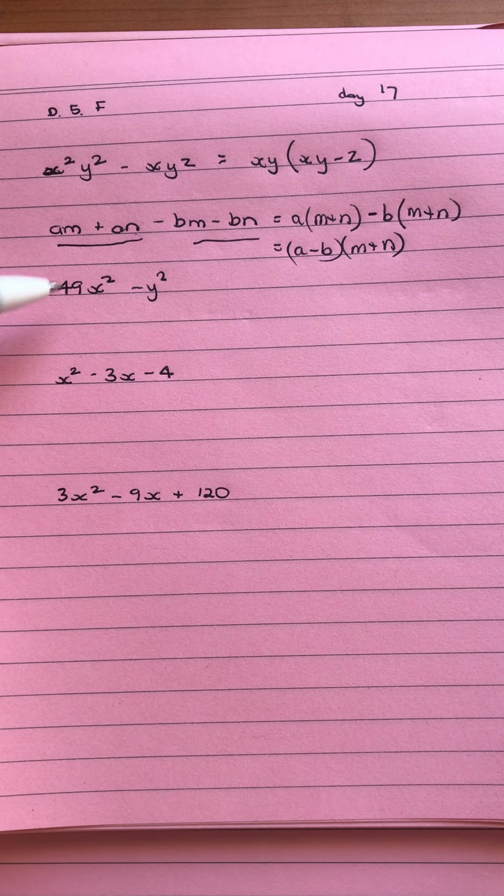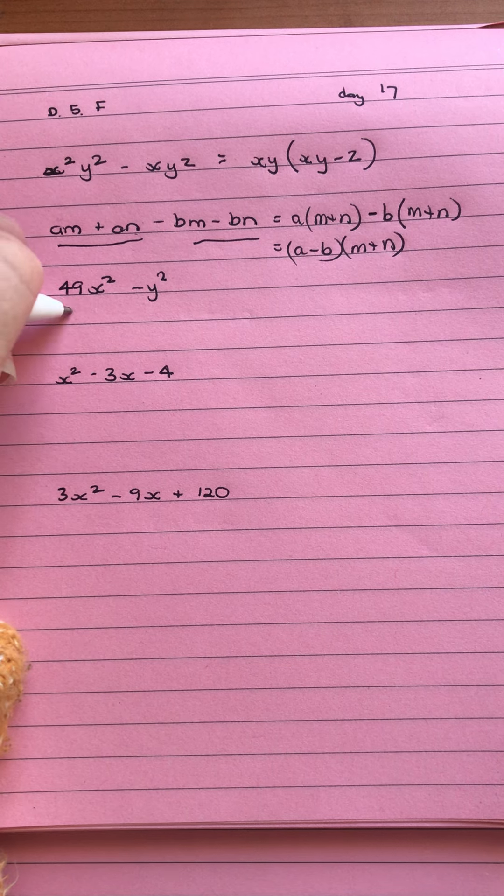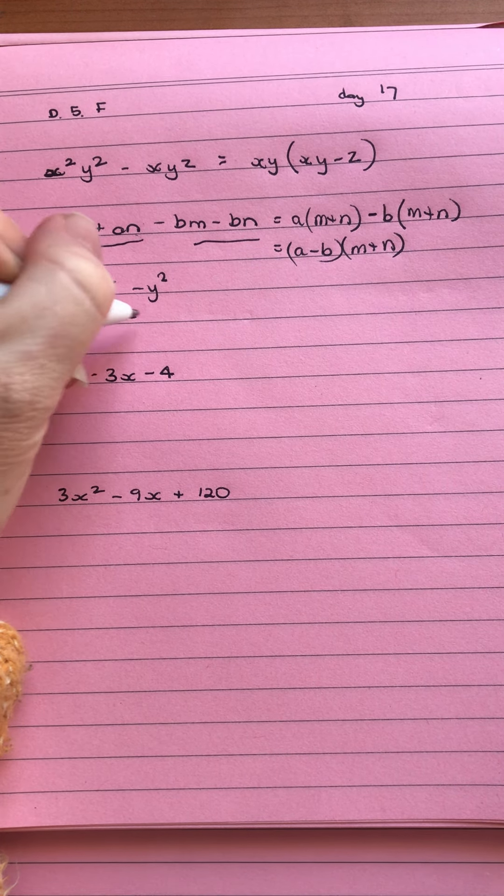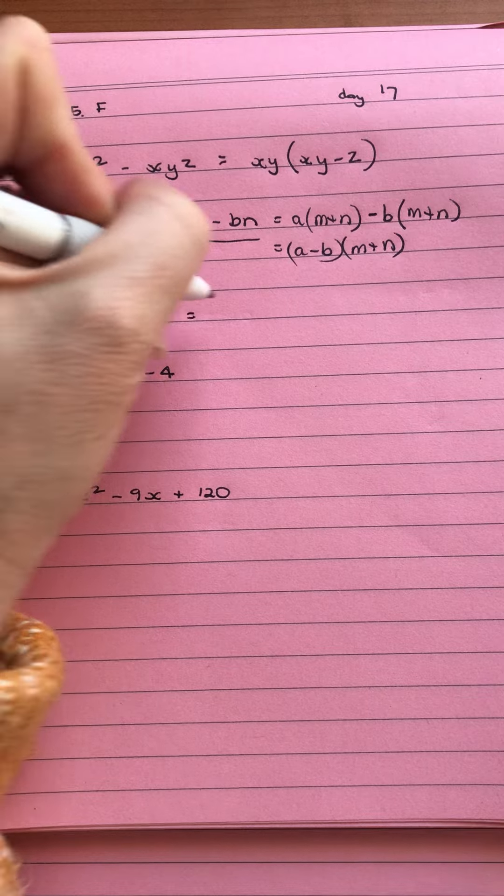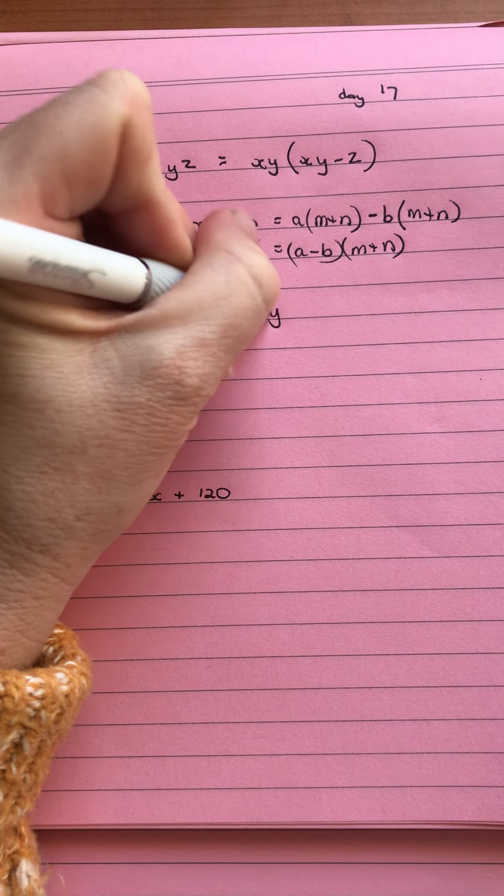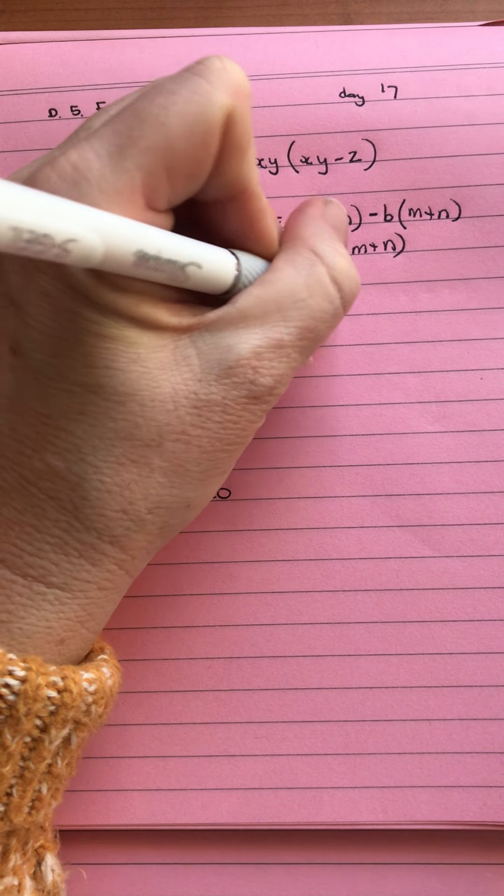For number 3, we've got a difference of two squares. So we can write that as 7x all squared minus y squared. And then we're able to write 7x take y and 7x plus y.